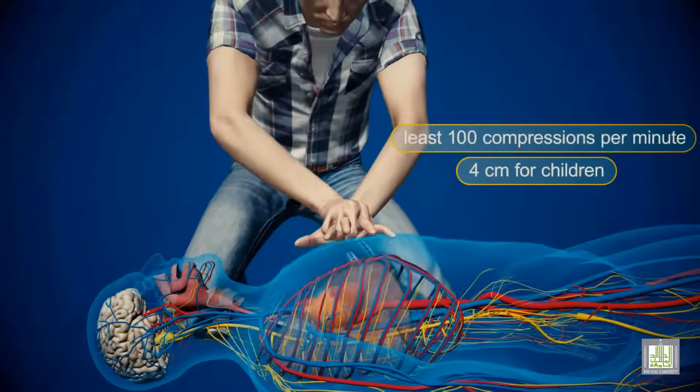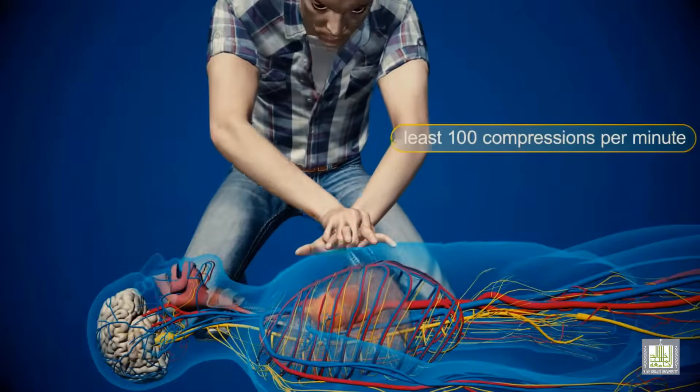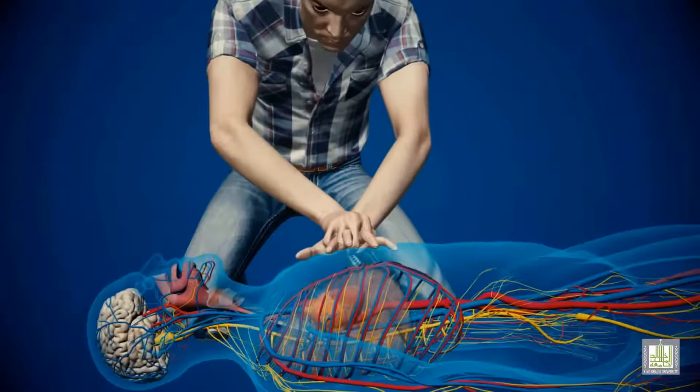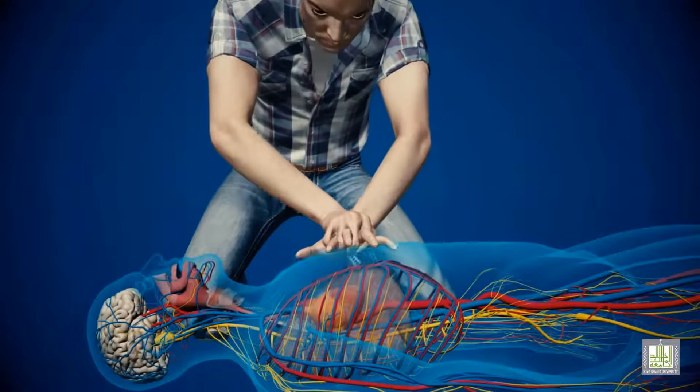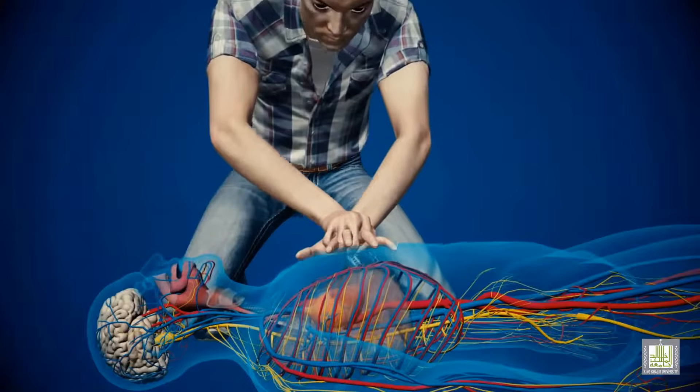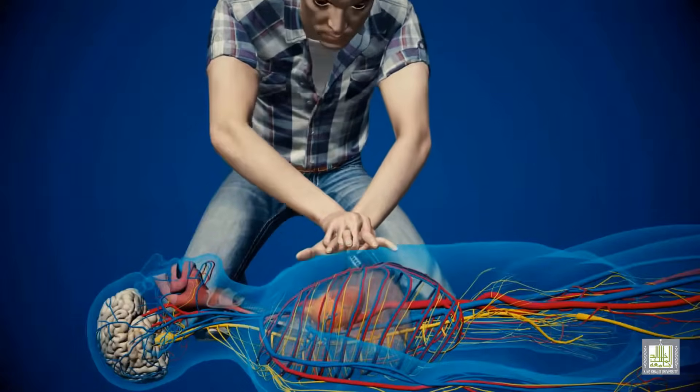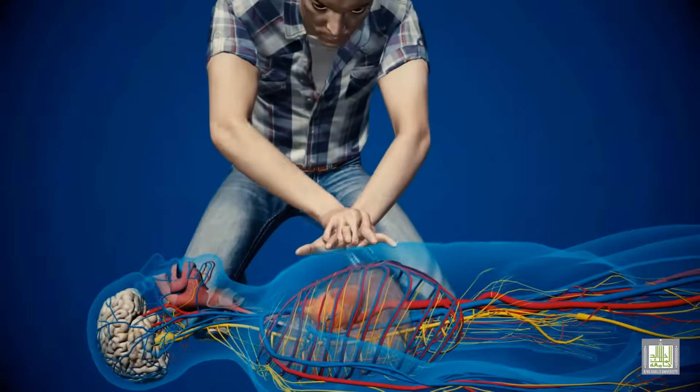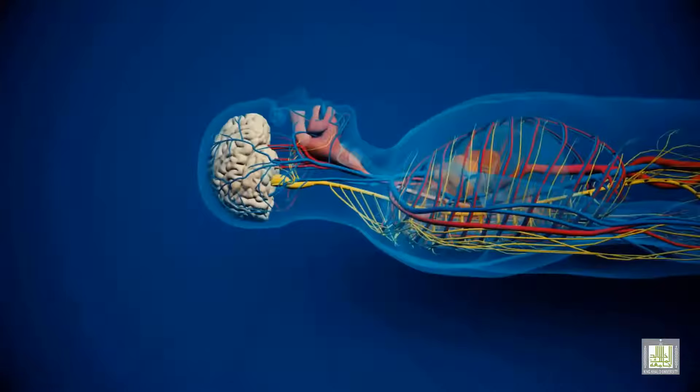Use a rate of 30 compressions followed by two breaths for adults and children in the presence of one rescuer, or 15 compressions followed by two breaths for children in the presence of two rescuers.